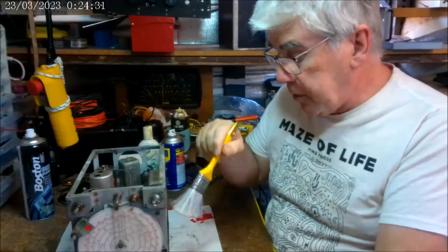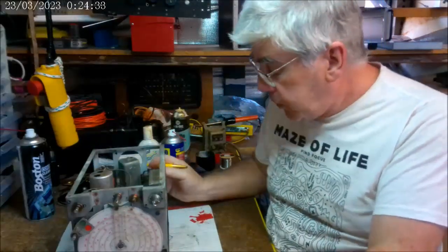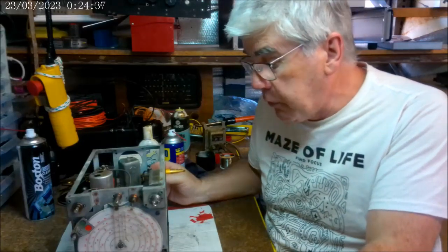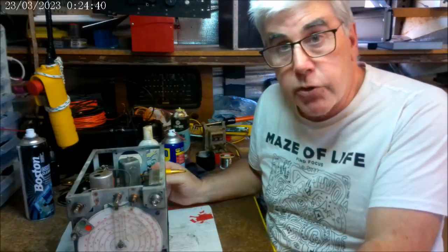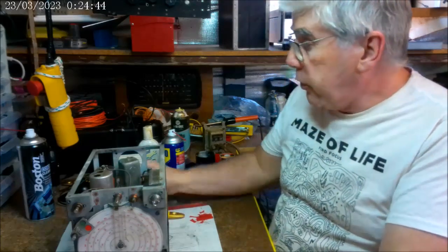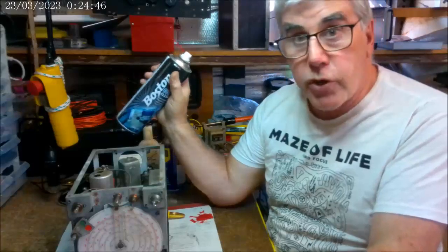And so I basically just dusted out the entire chassis, every nook and cranny that I could find, and then went over it again. Once I'd done that, and I was satisfied that I'd removed all the loose material, I then went through the chassis with contact cleaner.